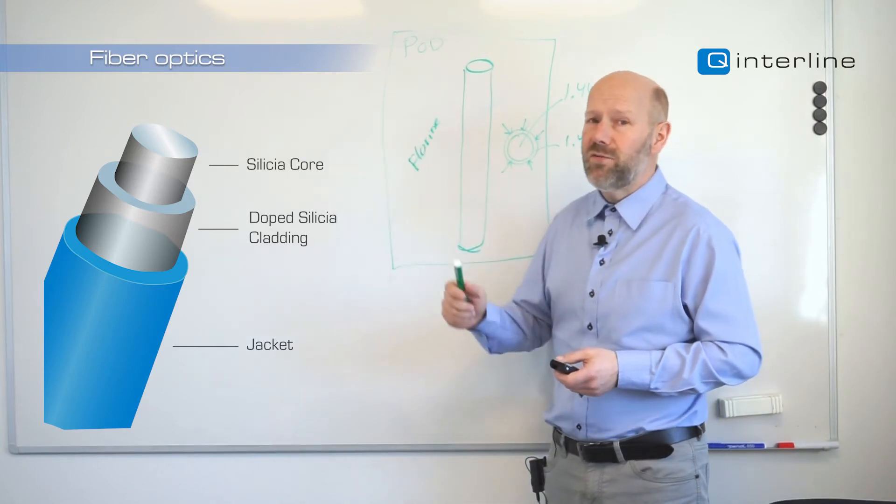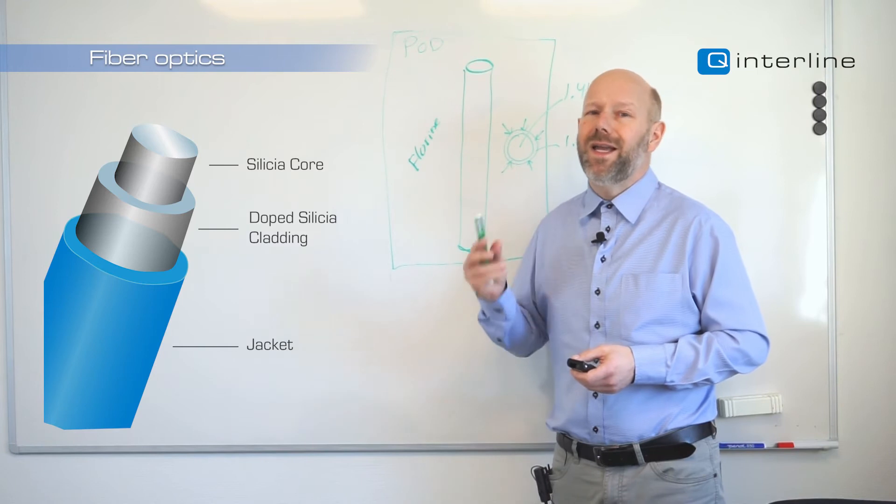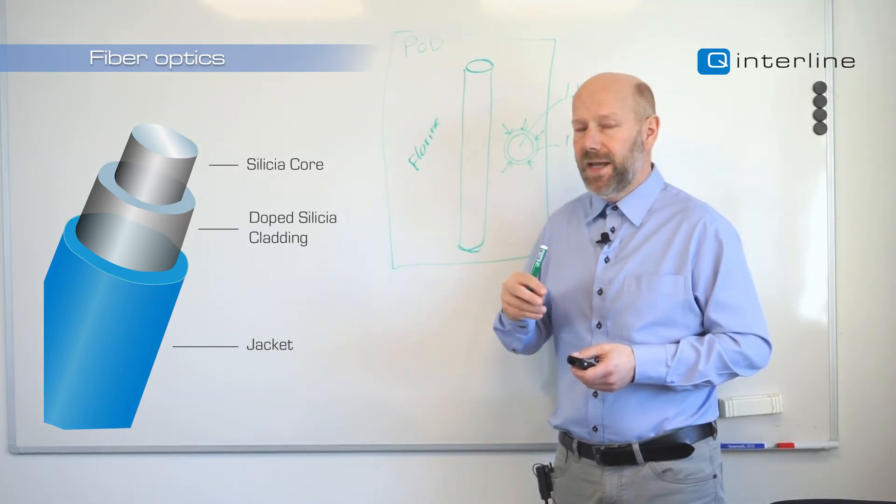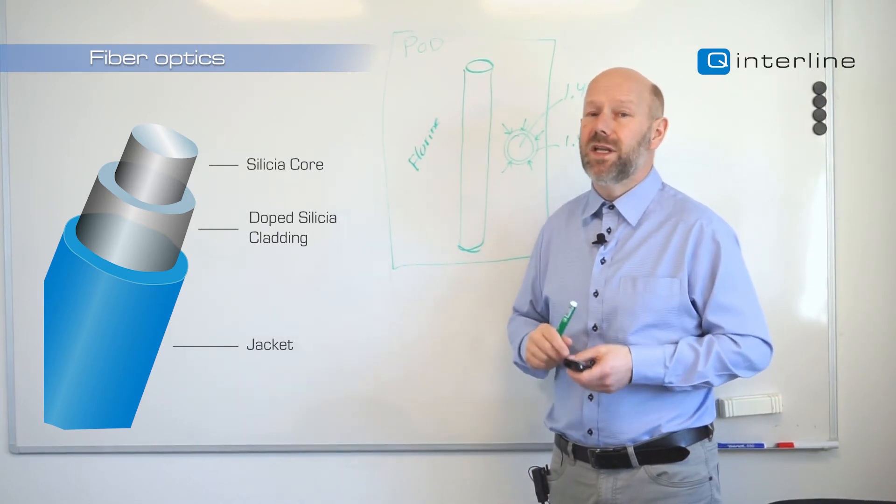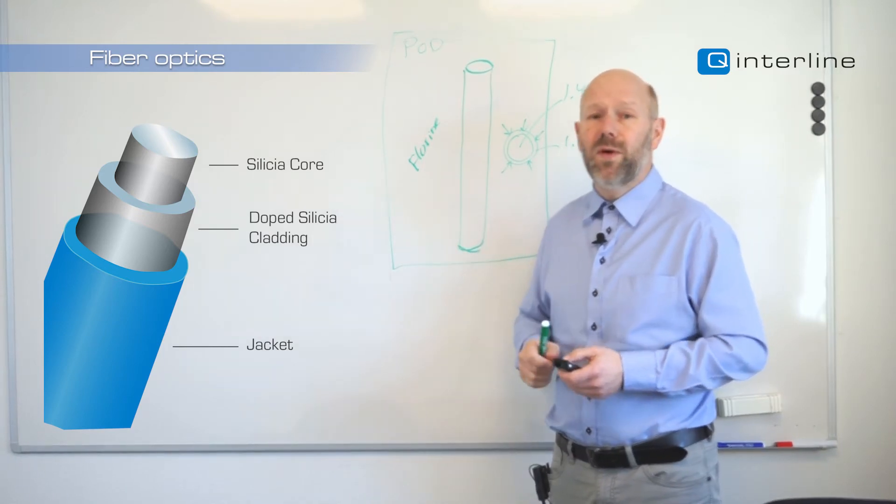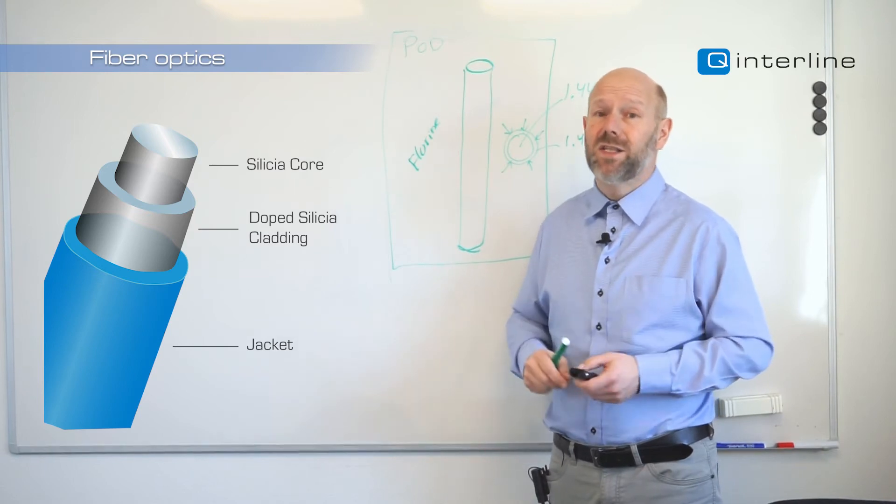Now that we have this fiber it will be very very fragile. So what we do is we can see on the graph here we have the core, we have the cladding and we put on a jacket. It's generally a plastic jacket which is deposited and gives it a lot of tensile strength and we can actually roll it up. Whereas if we didn't have that jacket it would be very fragile and simply break.